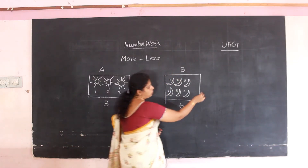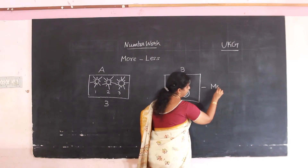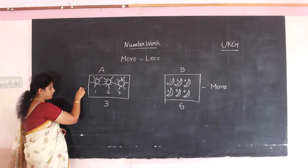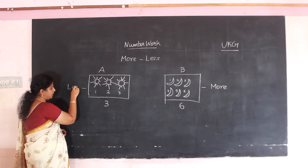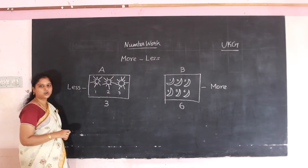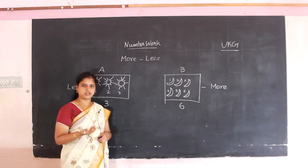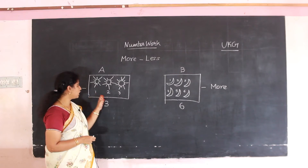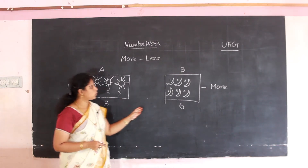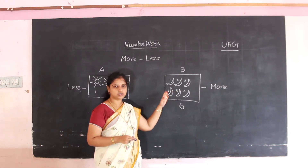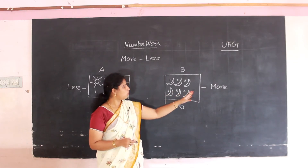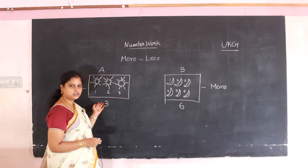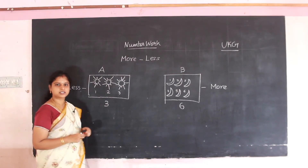Higher number means more — M, O, R, E. Greater number means more. Less — L, E, S, S — means fewer. More means naraiya (many). Less means koraiya (fewer). Box A has only 3 suns and box B has 6 moons inside, so box B is more and box A is less. This is one example for more and less.